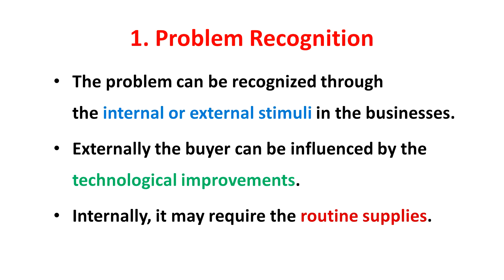The first stage is Problem Recognition. The starting stage of the business buying process is the same as consumer buying. The problem can be recognized through internal or external stimuli in businesses. Externally, the buyer can be influenced by technological improvements in various product or service categories or processes involved in production. Internally, it may require routine supply. In all cases, a business buyer may recognize the need for a product.